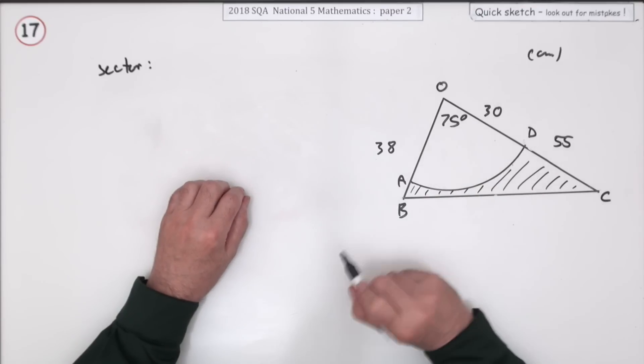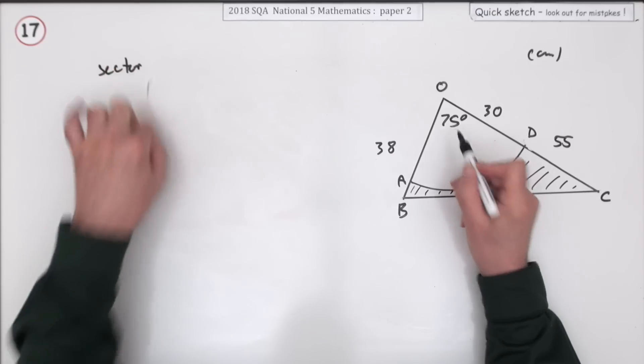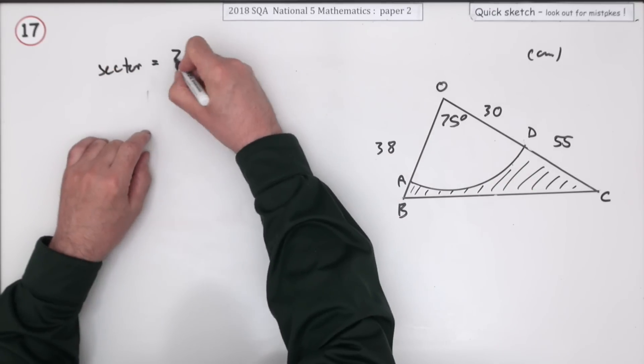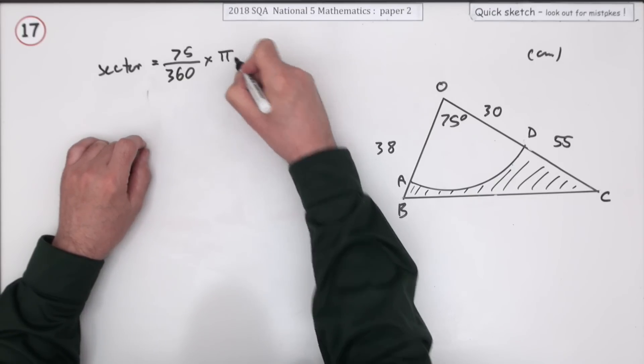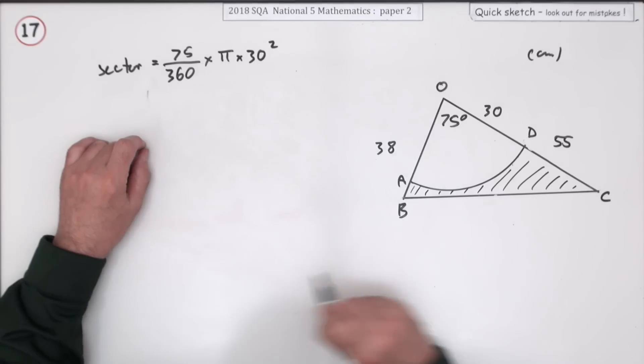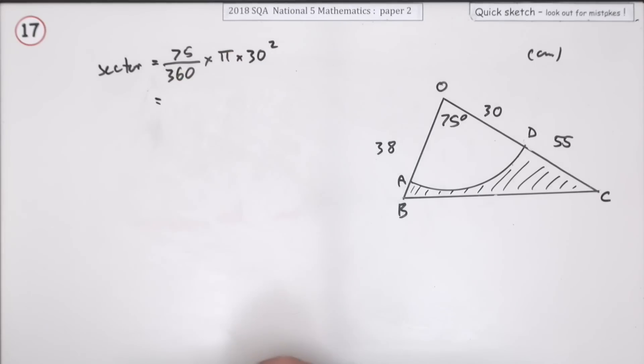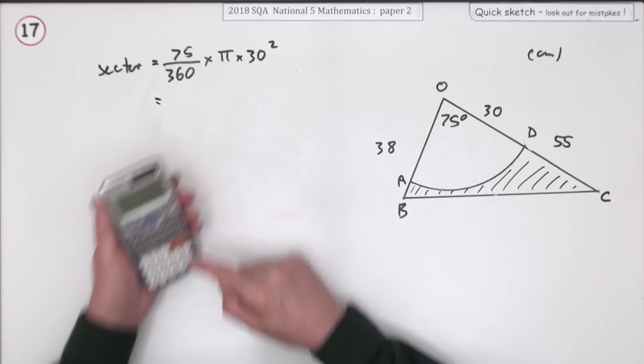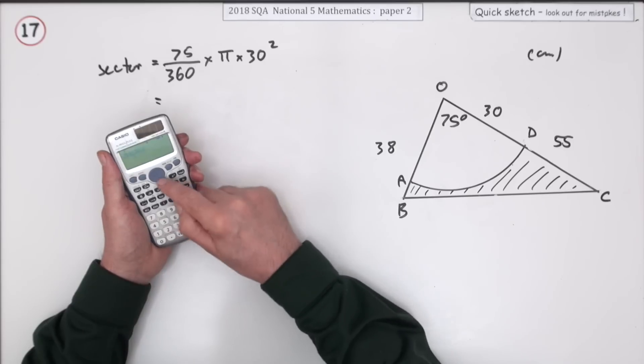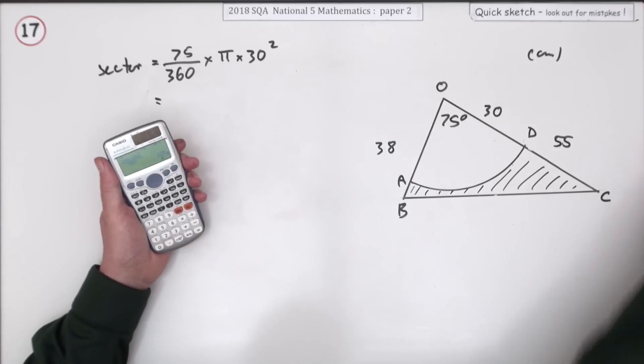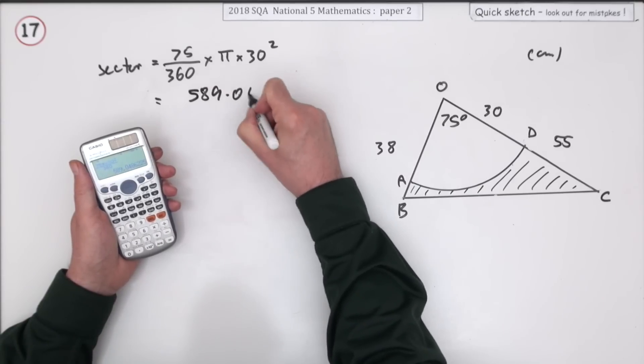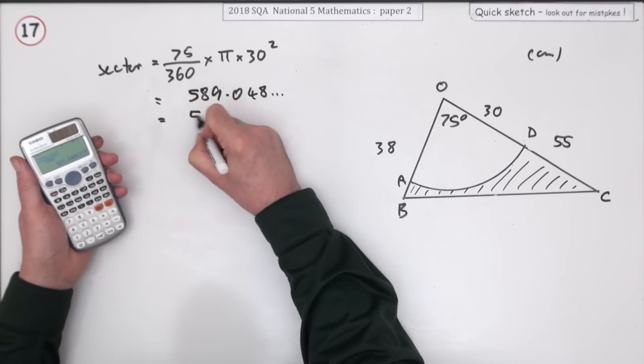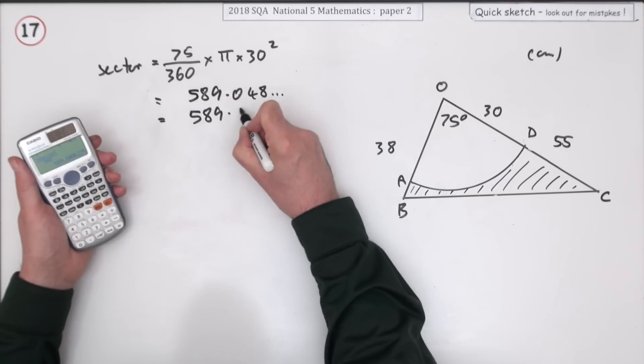Area of the sector: it's a fraction of a circle, 75 degrees out of 360, so it's 75 over 360 times pi times r squared. I'll put 30 squared into my calculator. That comes to 589.048, and I'll take it to two decimal places: 589.05.